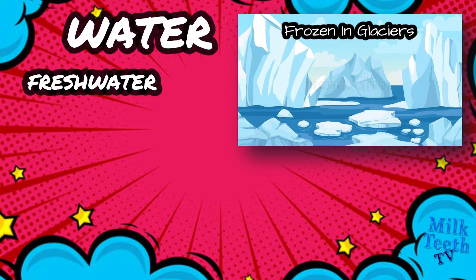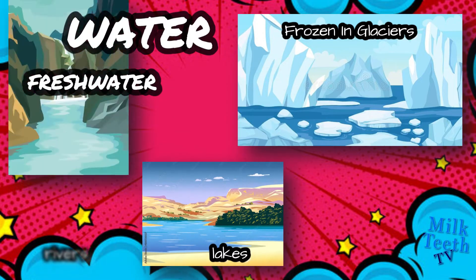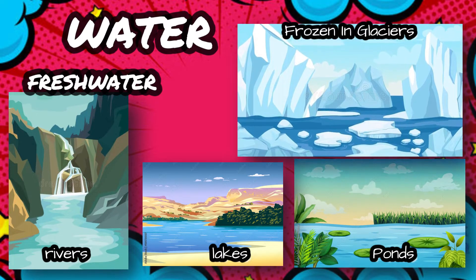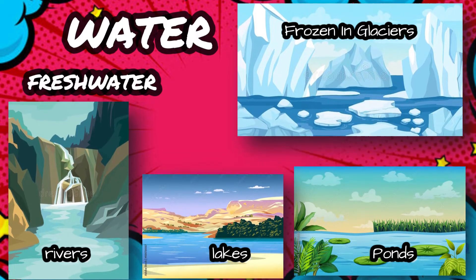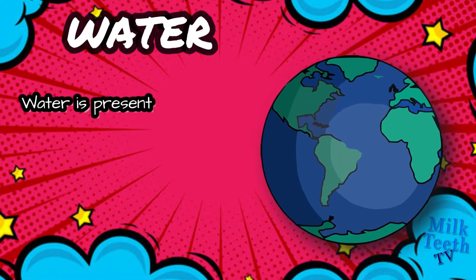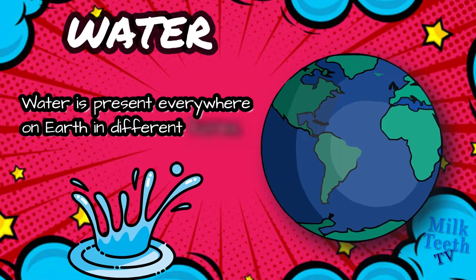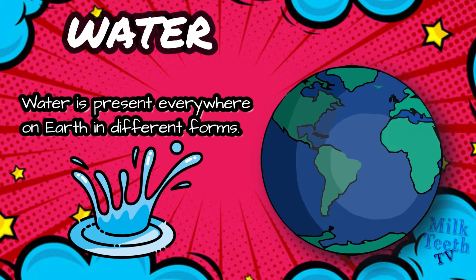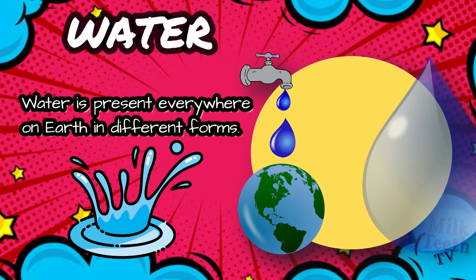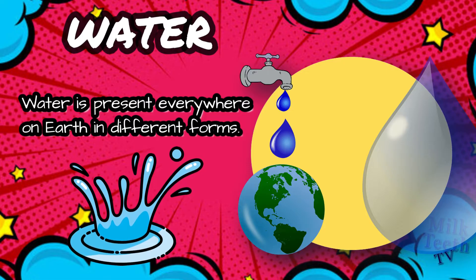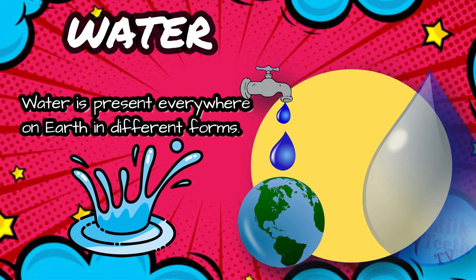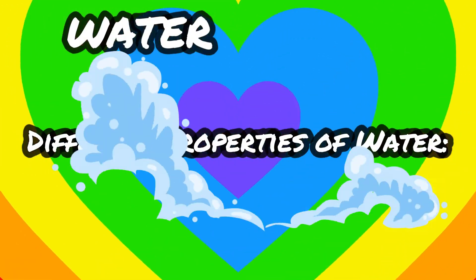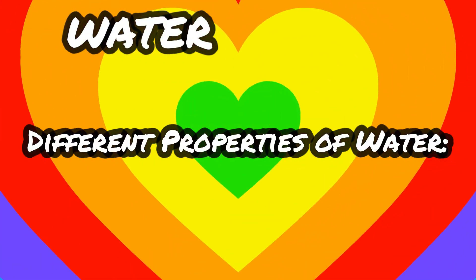Water melts from glaciers to form lakes, rivers, ponds and streams. Water is present everywhere on Earth in different forms, even underground and in the atmosphere. Let's learn about the different properties of water.